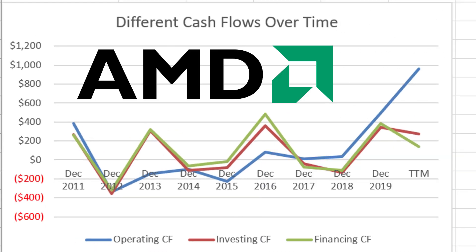Looking at AMD's cash flows over the past 10 years, you can see they've had their struggles with negative operating cash flows, which have finally turned positive recently. Their financing cash flows are very positive for most years, so they've really had to go back to the equity markets to raise money. You can also see positive investing cash flows in most years — though a lot of their quote investments are not classified as investments on a traditional statement of cash flows, because they do a lot of research and development.